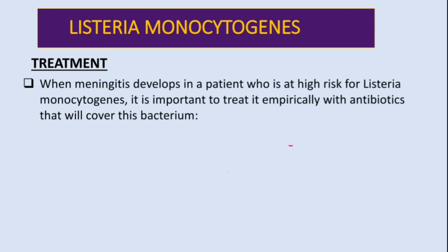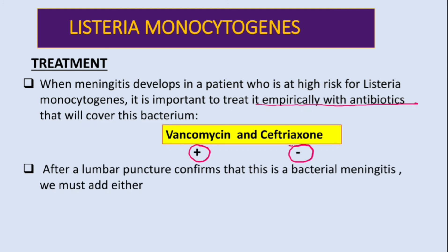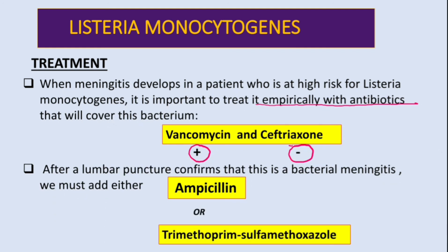To conclude, let's talk about treatment. When meningitis develops in patients at risk of listeria, it is important to treat empirically with antibiotics that cover known causes of meningitis. Empirical treatment uses vancomycin and ceftriaxone — for gram-positive and gram-negative organisms respectively. After lumbar puncture confirms listeria, we add ampicillin or trimethoprim-sulfamethoxazole to the previous regimen.